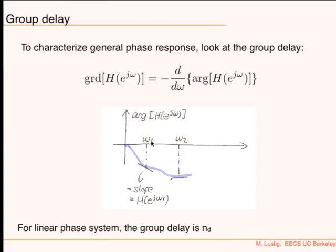A pulse at ω₁ will be delayed by a certain amount. A narrow-band pulse around ω₂ will be delayed by a different amount. That is called dispersion — different frequencies delayed by different amounts. This happens, for example, in propagation of light inside materials, where different frequencies are delayed by different amounts, giving you dispersion of the spectrum. For a linear phase system, group delay is just N_D. For a nonlinear phase system, the group delay varies with frequency.